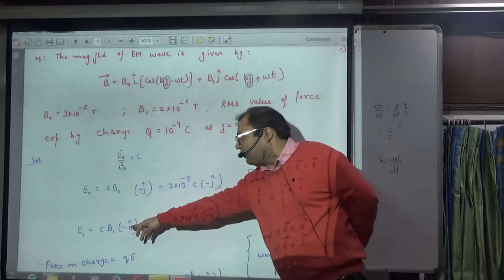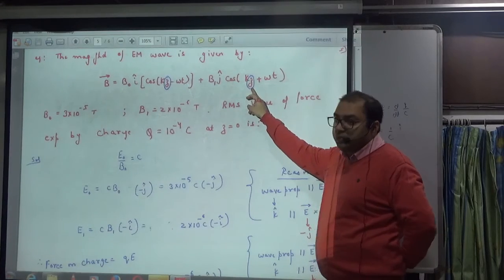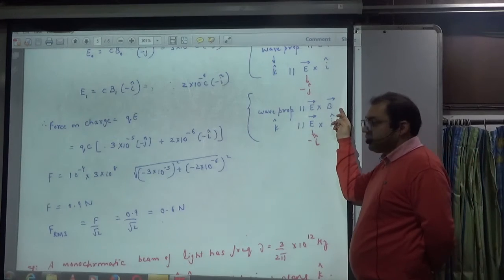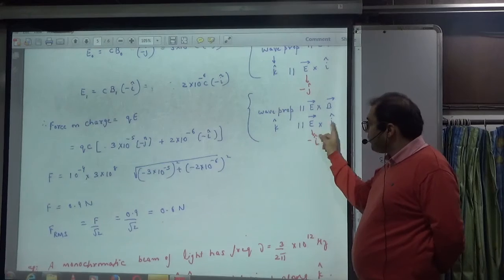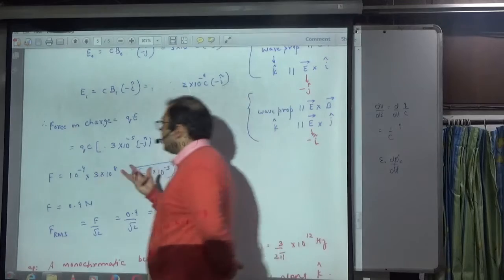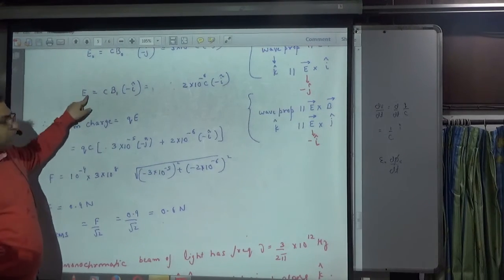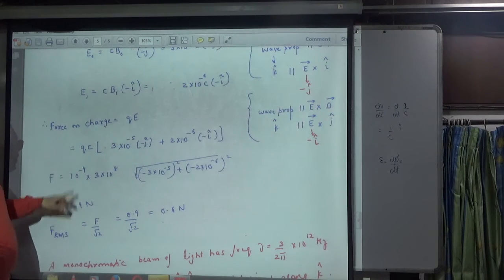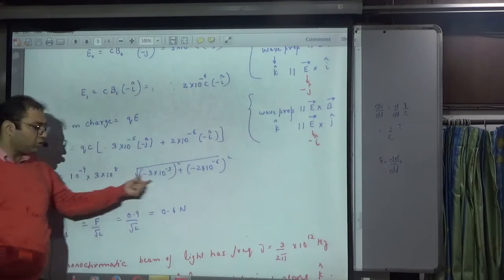This is B₁, so E₁ = c × B₁. B₁ is along j-cap, and wave propagation is along z. Using the same rule — wave propagation equals E cross B — with wave propagation along k and B along j, by the cross-foot rule E₁ is along −i-cap. The total force on the charge particle is q × E, with both E₀ and E₁ contributing. Add both components in vector form. The magnitude is q·c times √(coefficient₁² + coefficient₂²).